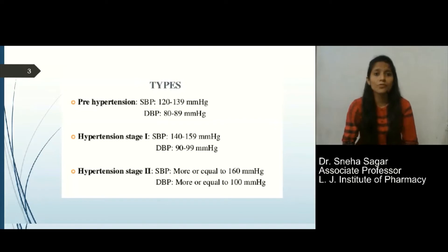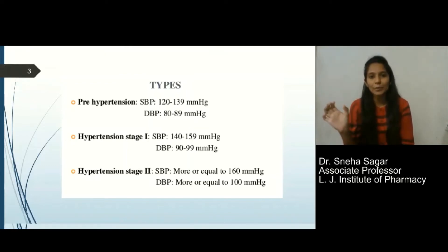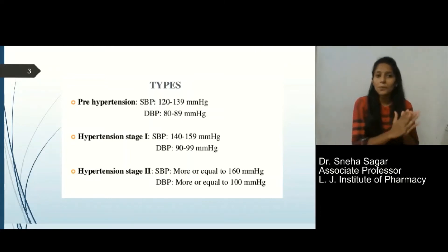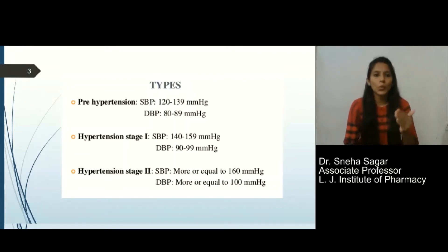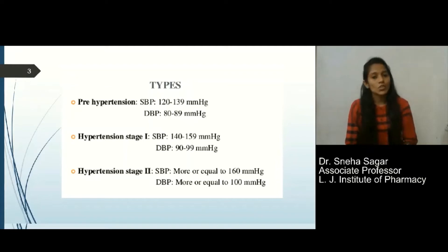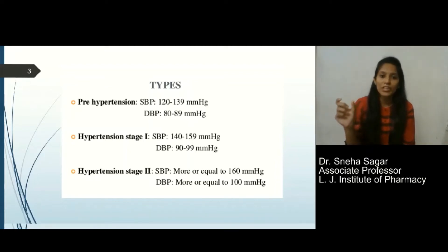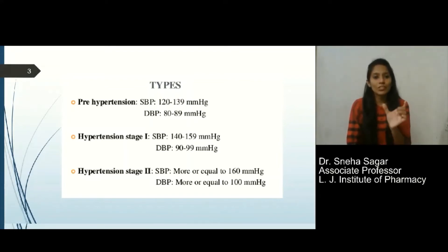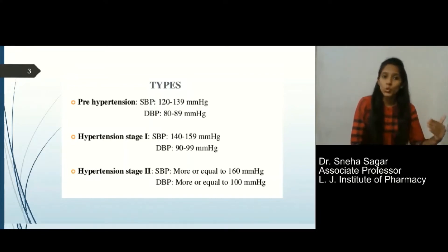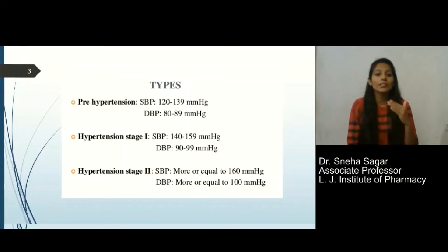There are several types of hypertension. In prehypertension, systolic blood pressure falls between 120 to 140 mmHg and diastolic blood pressure falls between 80 to 89 mmHg. The severity of the disease is very low compared to the severe stage. In stage 1 hypertension, systolic blood pressure ranges between 140 to 159 mmHg and diastolic between 90 to 99 mmHg. In severe hypertension (stage 2), systolic blood pressure is higher than 160 mmHg and diastolic is higher than 100 mmHg.